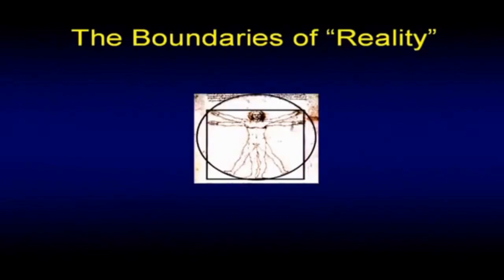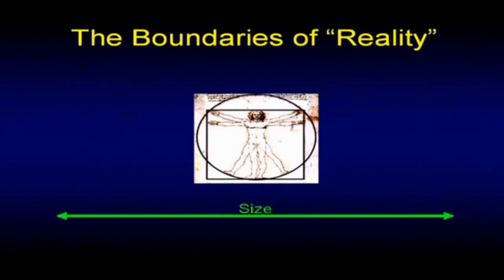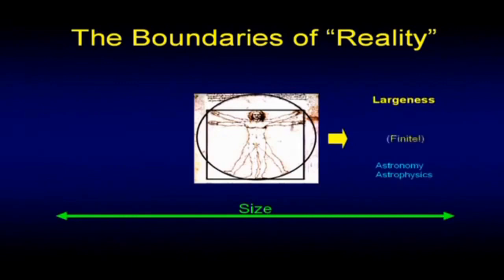As we explore the boundaries of reality, I'm using Da Vinci's Vitruvian Man as a symbol representing our anthropic reach — size horizontally at the bottom, large being to the right, small being to the left. Last time we explored bigness: astronomy, astrophysics, the universe. The main discovery on the largeness side was that the universe is finite — not infinite. That's the biggest discovery of 20th-century science. It may be expanding, but it's finite. And we demonstrated how we know that last time. So this time we're going to go the other way — we're going to explore smallness.